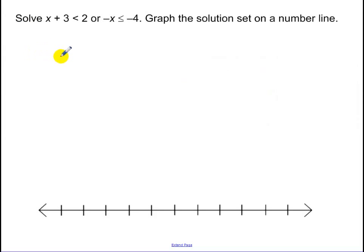So solving an 'or' inequality, you have x plus 3 less than 2, x is less than negative 1. Or, I need that or in there. I divide by negative 1. Make sure that you switch the sign, or x is greater than 4.